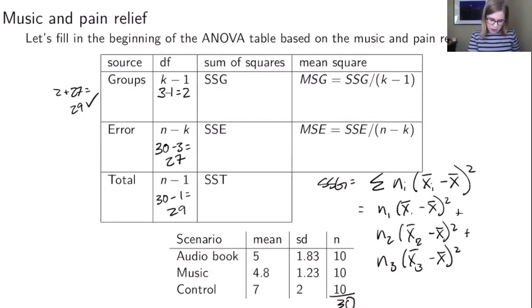So one thing that we need are the x bar sub i's. So I'm going to just substitute in here, I'm going to substitute the 5 and then for x bar 2 I'm going to substitute 4.8 and for x bar sub 3 I'm going to substitute 7. And then let's do the n sub i's as well. So n1 is 10 and n2 is also 10 and n3 is 10. So our sample sizes are the same in this example. They won't always be but in this example they are. And then the last thing that we need is the overall x bar which I think I forgot to tell you. That would be given to you. You wouldn't have to compute that.